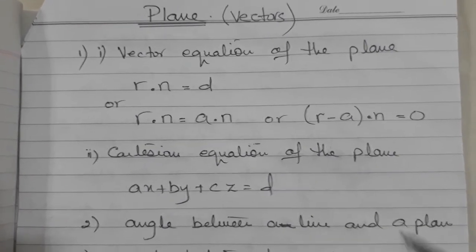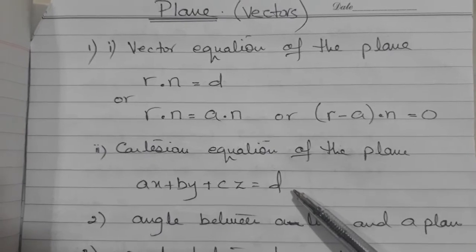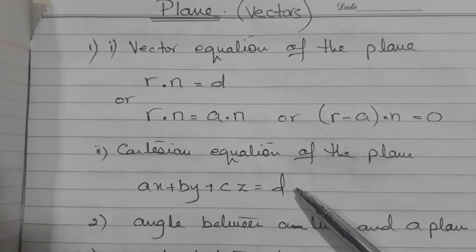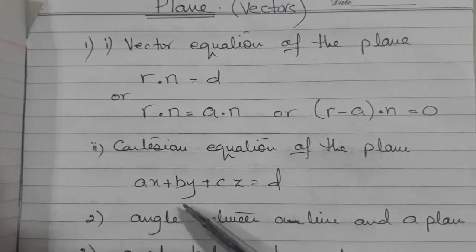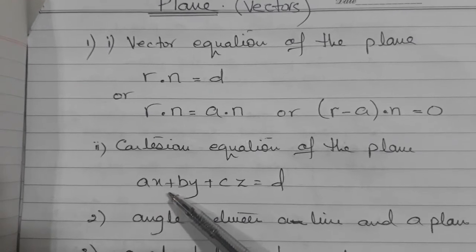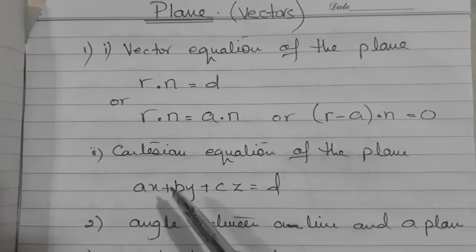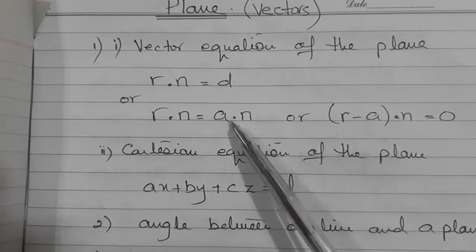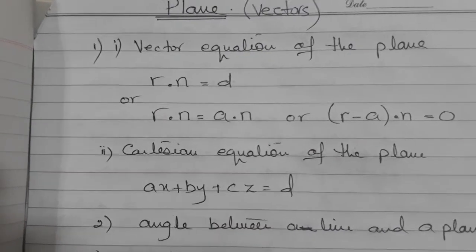Second is Cartesian equation of the plane which is asked like 99% in the papers. So Cartesian equation of the line: a multiply by x plus by plus cz equals to d. What is the meaning of all these letters and symbols here? We will see in a while.